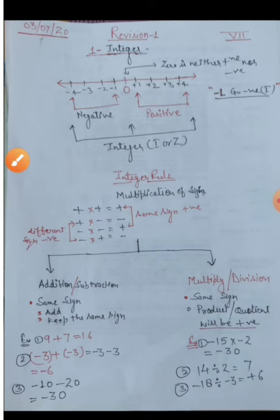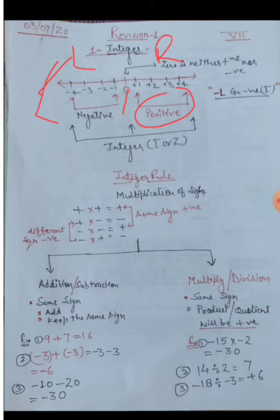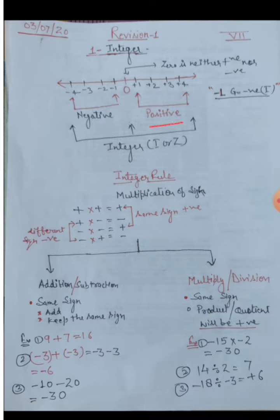Next is the integer. Look here — all the positive numbers on this number line. You know this is the number line, and in the middle we always keep zero. Positive numbers are always written on the right-hand side and negative numbers are always written on the left-hand side.